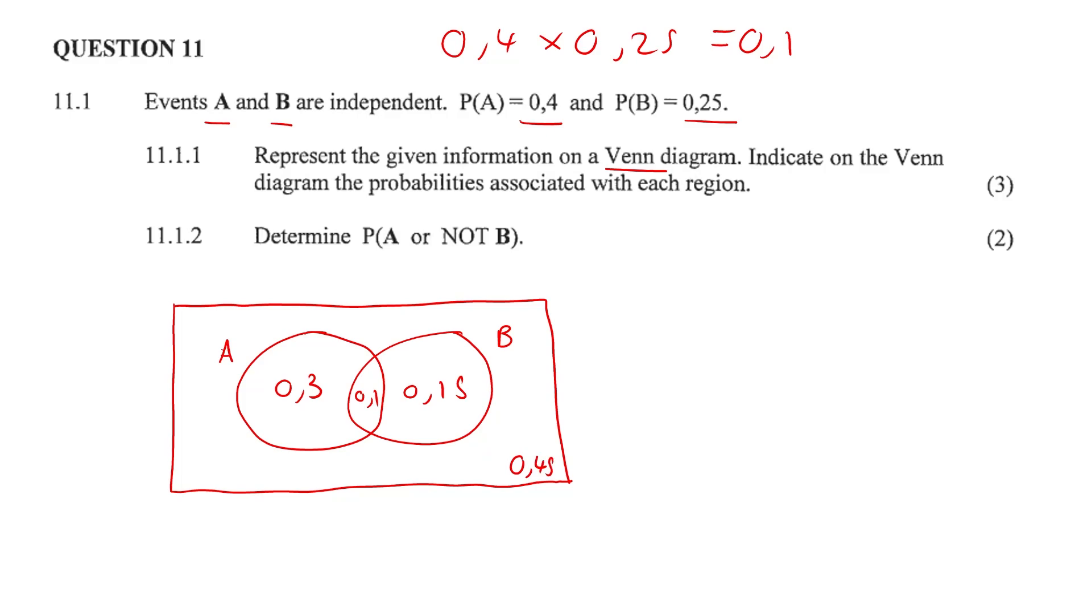The other 45%. That's 11.1.1. Let us take a look at now 11.1.2.